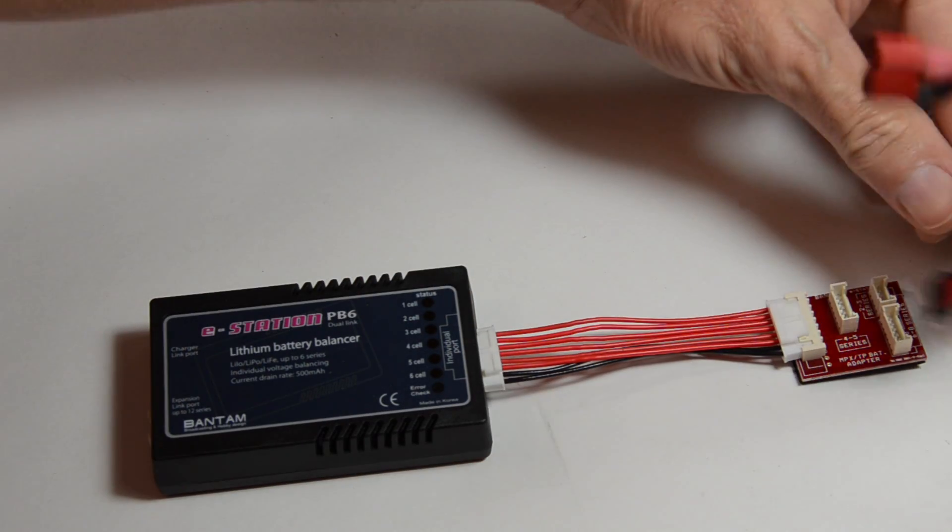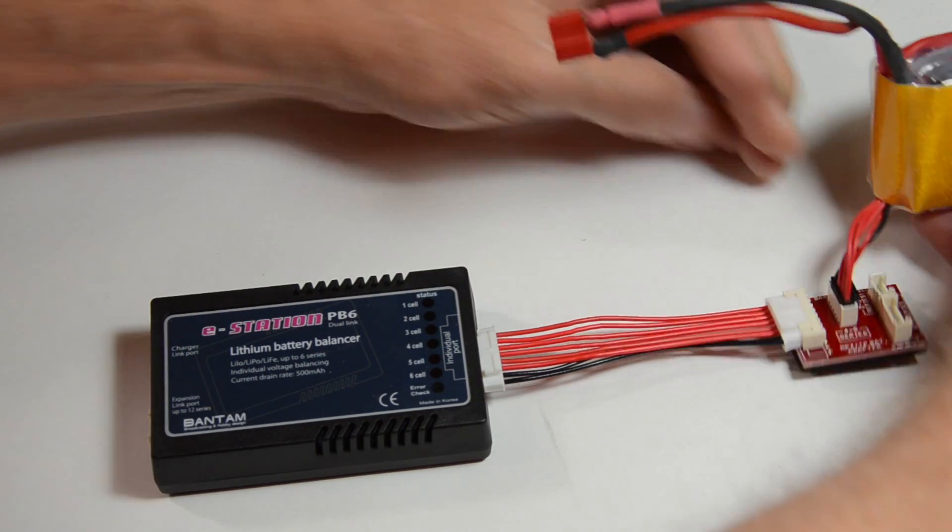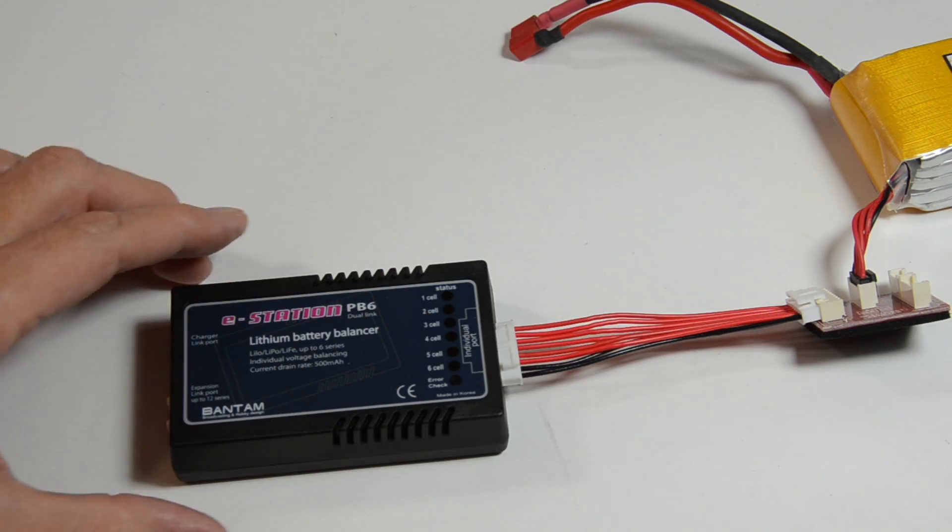This is a Bantam PB6 battery balancer. It'll balance your cells if you have a charger that doesn't have a built-in balancer.